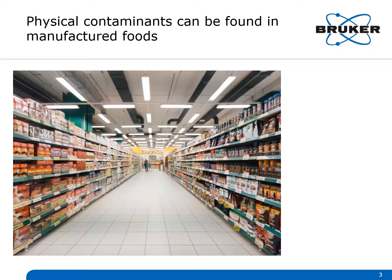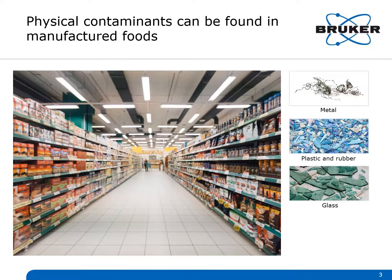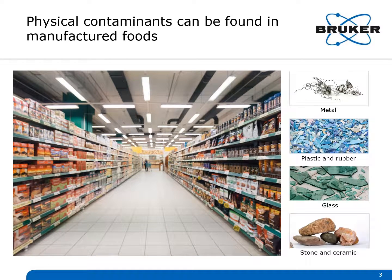What are some of the physical contaminants found in manufactured food products? The most common ones are slivers of metal, bits of plastic or rubber, small shards of glass, and even chips of stone or ceramic.